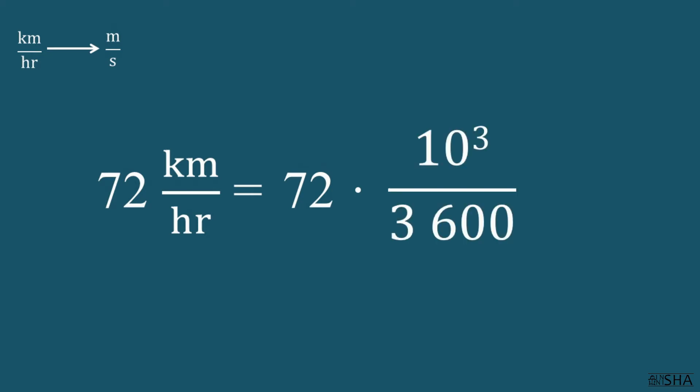In its numerator we'll convert kilometers into meters, multiplying by 10 to the third power. And in its denominator, we'll convert hours into seconds. There are 3600 seconds in one hour. With just a little bit of calculations, we get 20 meters per second.